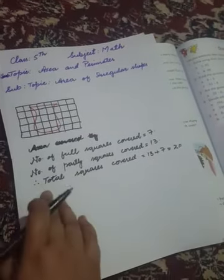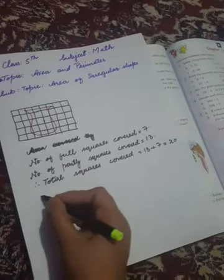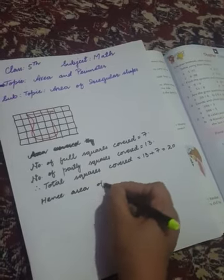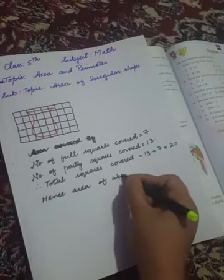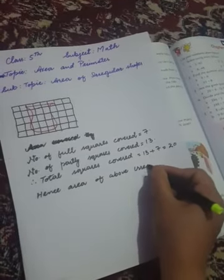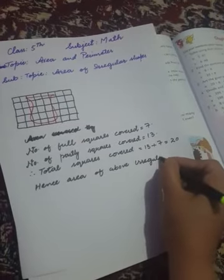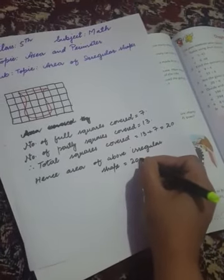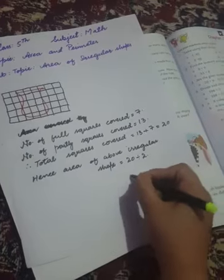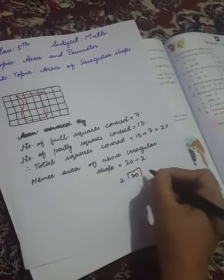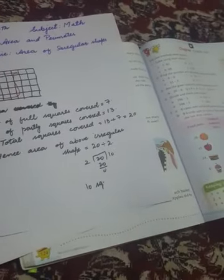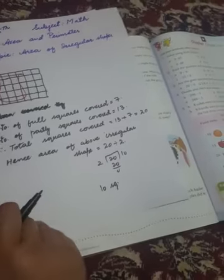Now add them. Therefore, total squares covered: 13 plus 7, that is 20. Now divide this 20 by 2, then we can find out the area. Hence, area of this above irregular shape is 20 divided by 2, that is 10 square units.